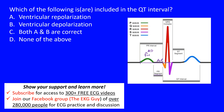Atrial repolarization is often buried within the QRS complex, which is why we don't usually see that wave. The QRS complex represents ventricular depolarization. The ventricles depolarize, and then the T wave follows, which represents ventricular repolarization. So our question is asking: does the QT interval include the T wave, the QRS complex, or both?